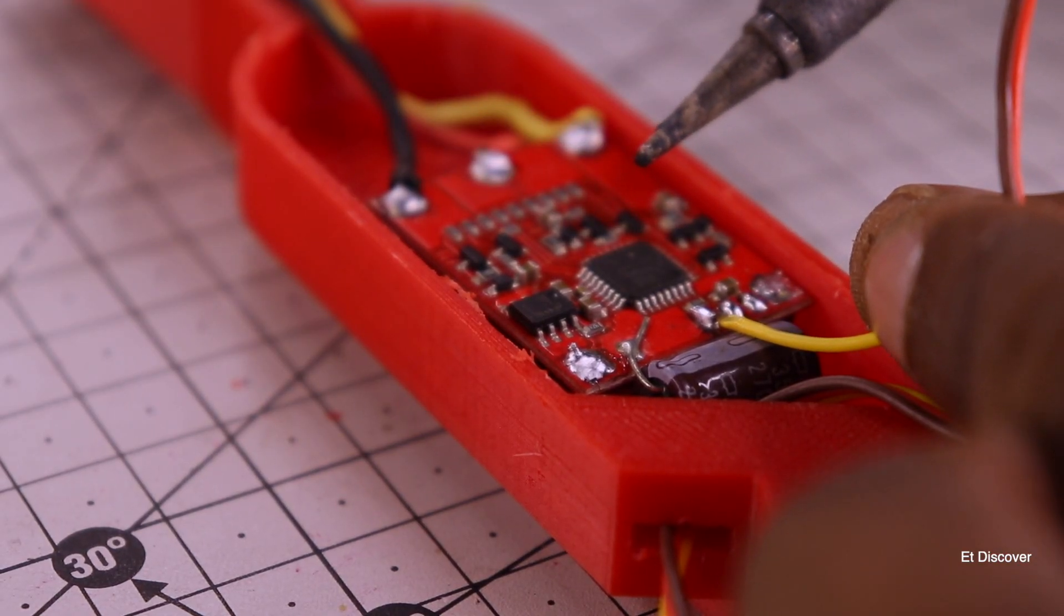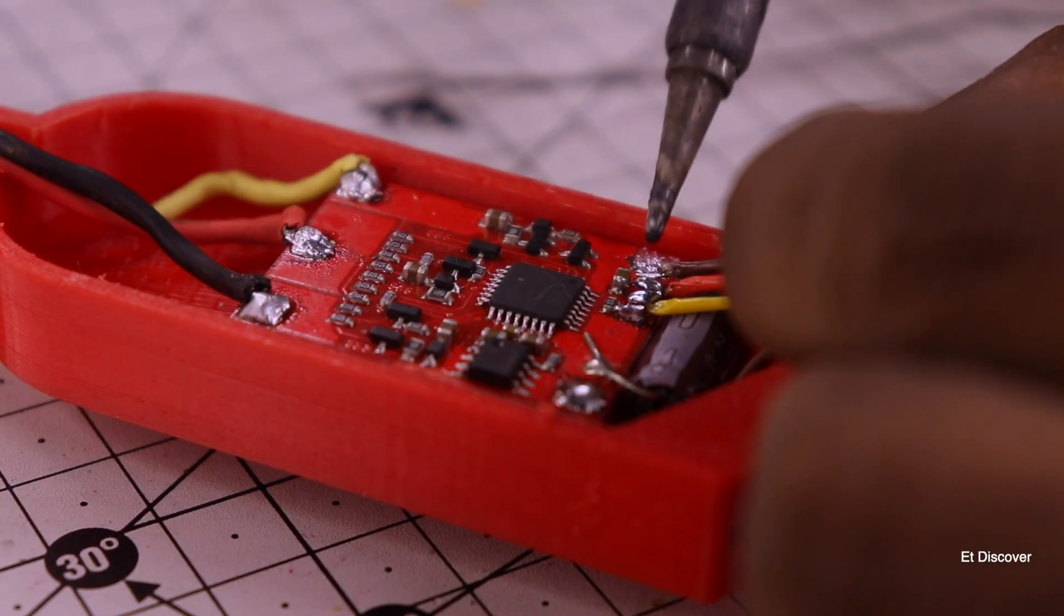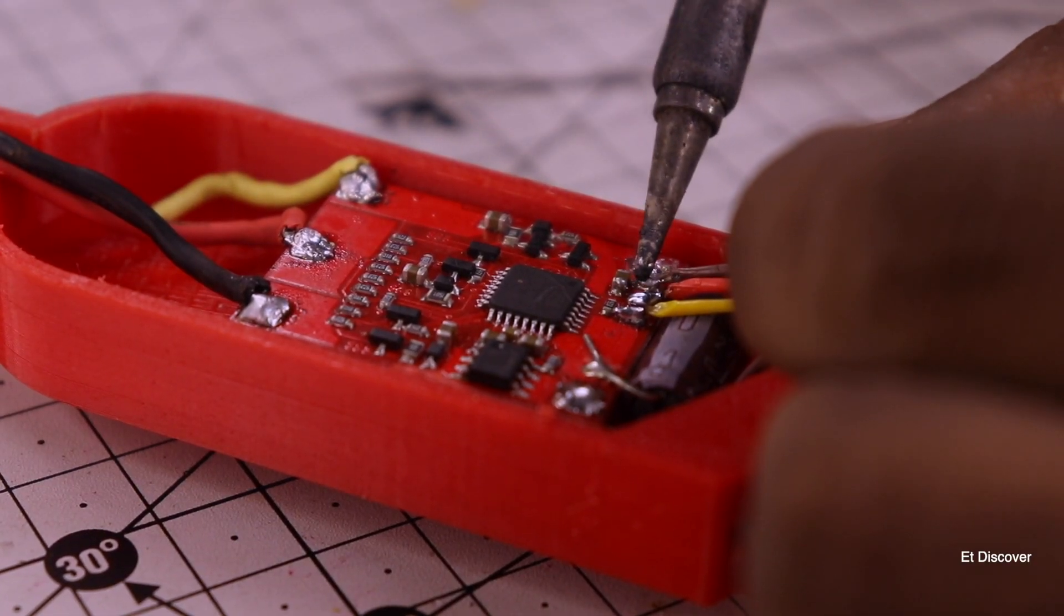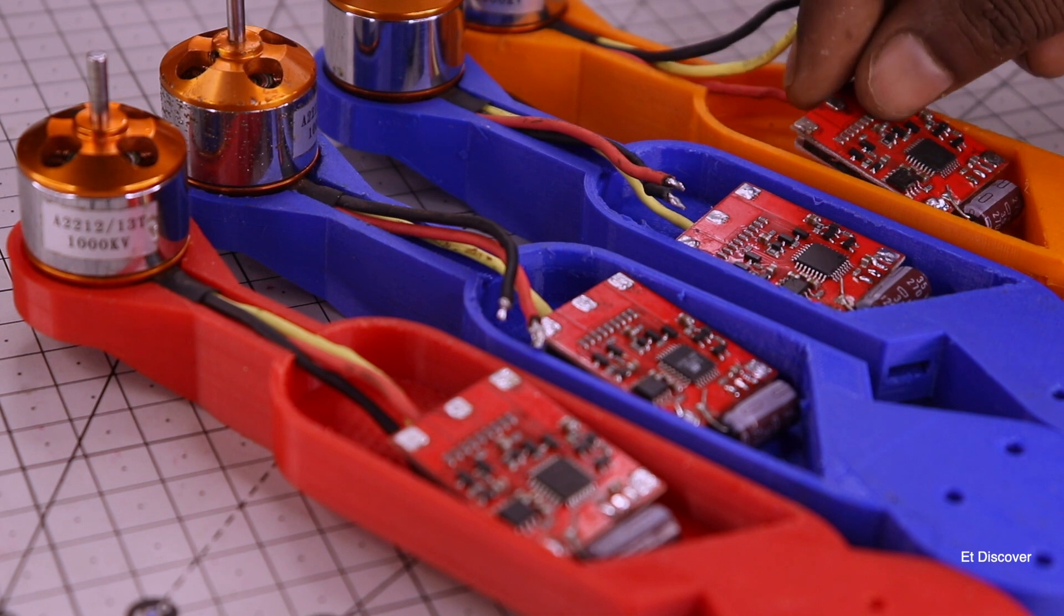And with that I will not forget to connect the PWM signal cable with my ESC which will go to my flight control system to rotate my motor properly. And in the same way I will make 4 hands.